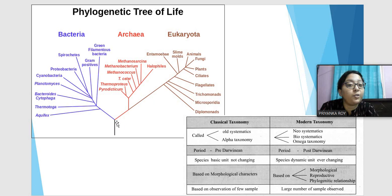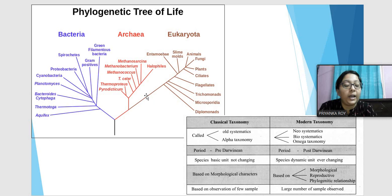The phylogenetic tree of life shows how from a common ancestor, life divided into Bacteria, Archaea, and Eukaryota and branched further. It indicates at what time point branching occurred, when a particular family evolved, and includes all various groups of organisms according to their evolutionary history.